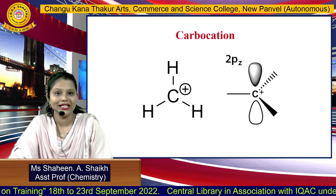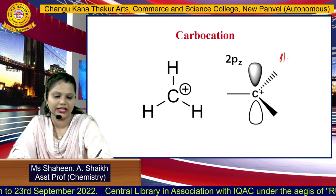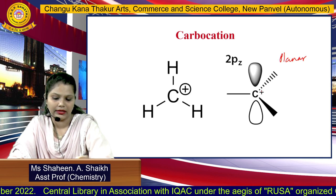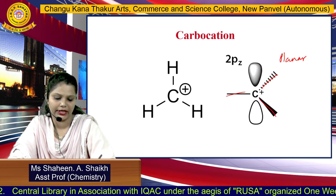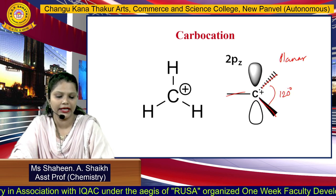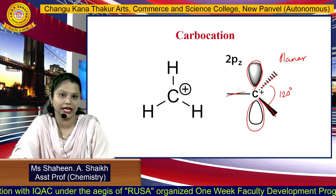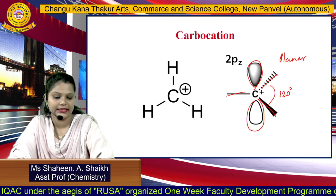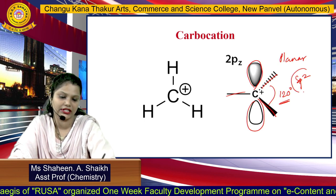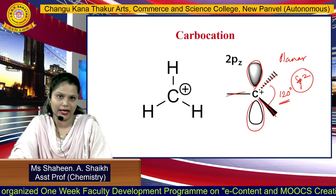What is the geometry and bond angle of carbocation? The geometry is planar — it is a trigonal planar species. These three bonds are on the plane. The bond angle is 120 degrees, and it has only one empty PZ orbital. Its hybridization is SP2. As the bond angle is 120°, obviously the hybridization is SP2. These are the features of carbocation.